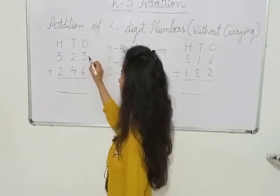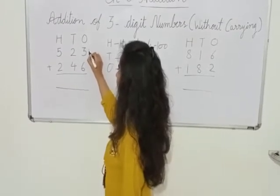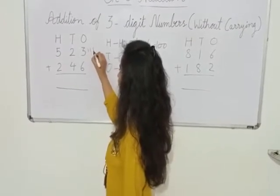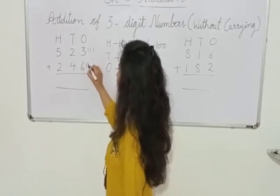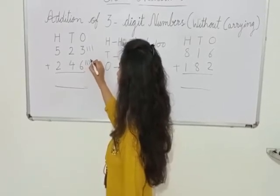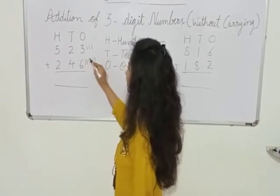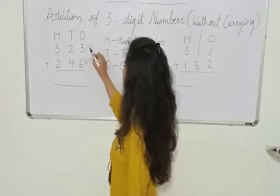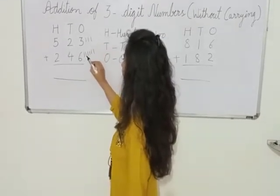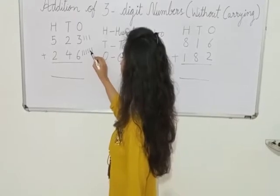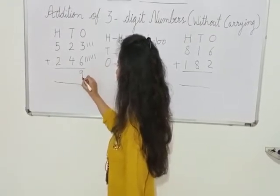So first we will add the 1's place. Here we have 3, so we will draw 3 lines: 1, 2, 3. Here we have 6, so we will draw 6 lines: 1, 2, 3, 4, 5, 6. So how many lines are there? 1, 2, 3, 4, 5, 6, 7, 8, 9. So we will write down 9 here.